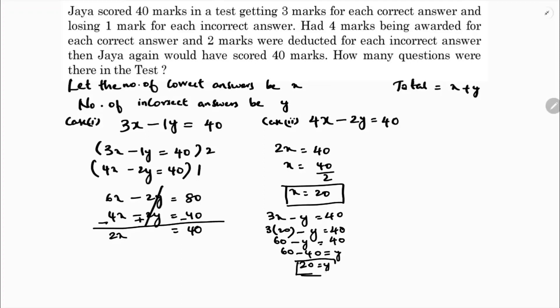So 20 correct answers and 20 wrong answers. So total number of questions is 40, 20 plus 20 which is 40.